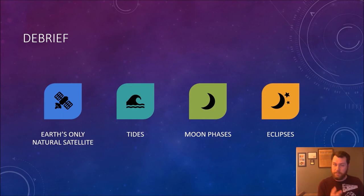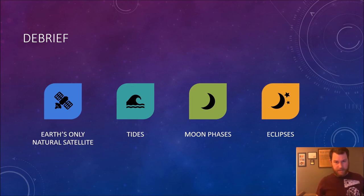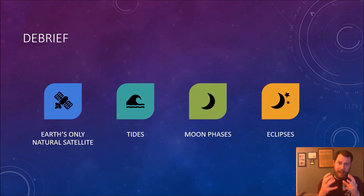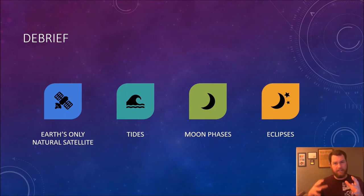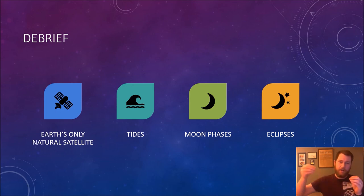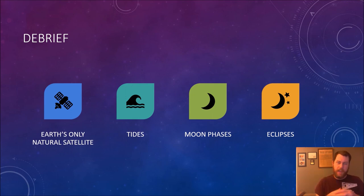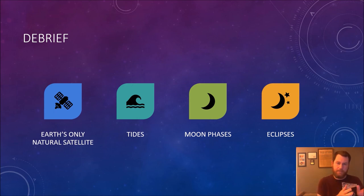The moon is Earth's only natural satellite — a satellite is any object that orbits or revolves around another object. The moon's gravity pulls on Earth's water, causing tides. When water moves toward the moon we have high tide; when it moves away, low tide. We have about two high tides a day.